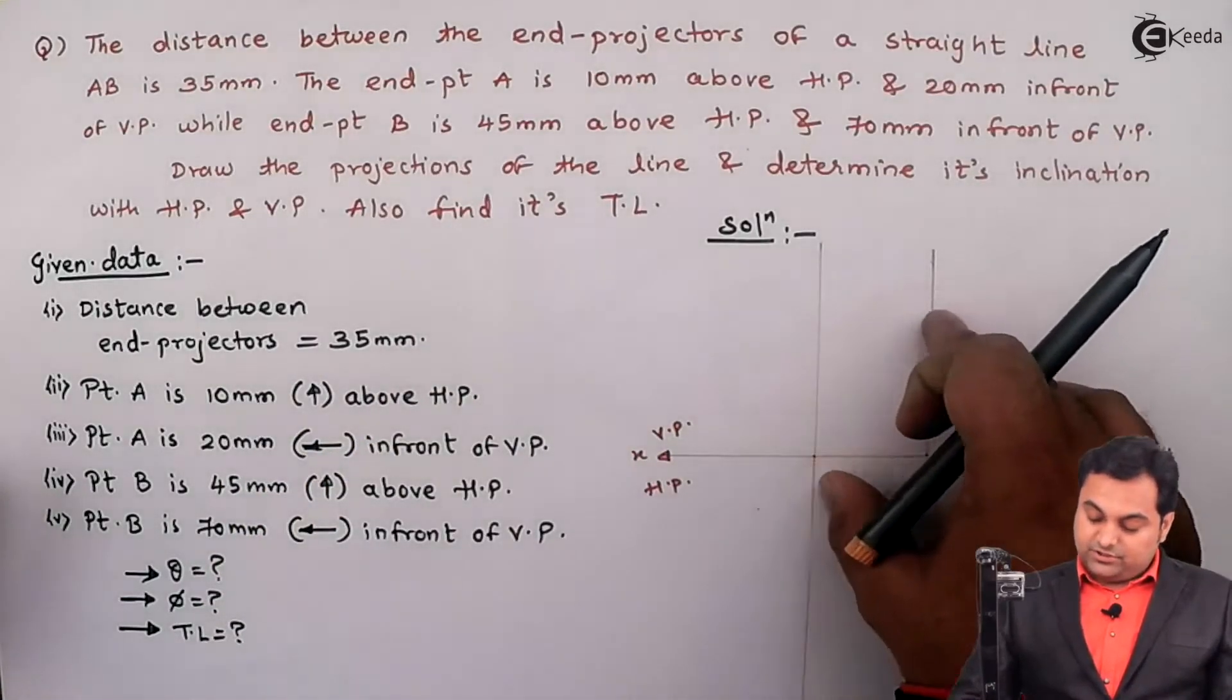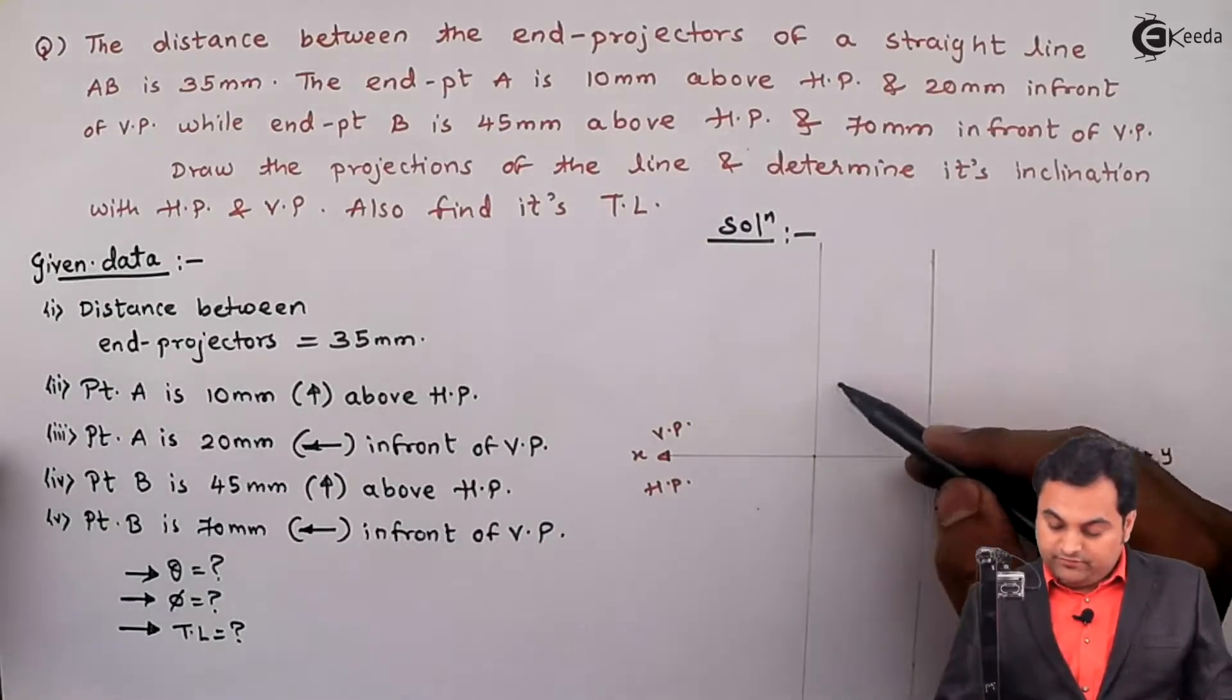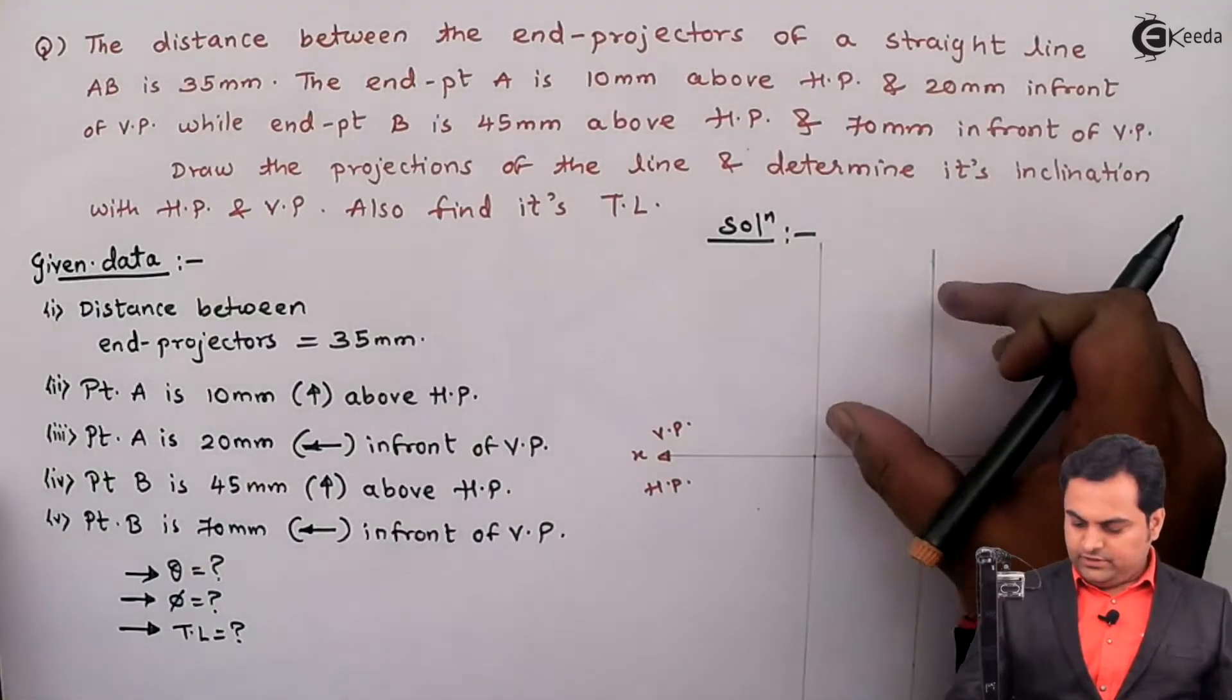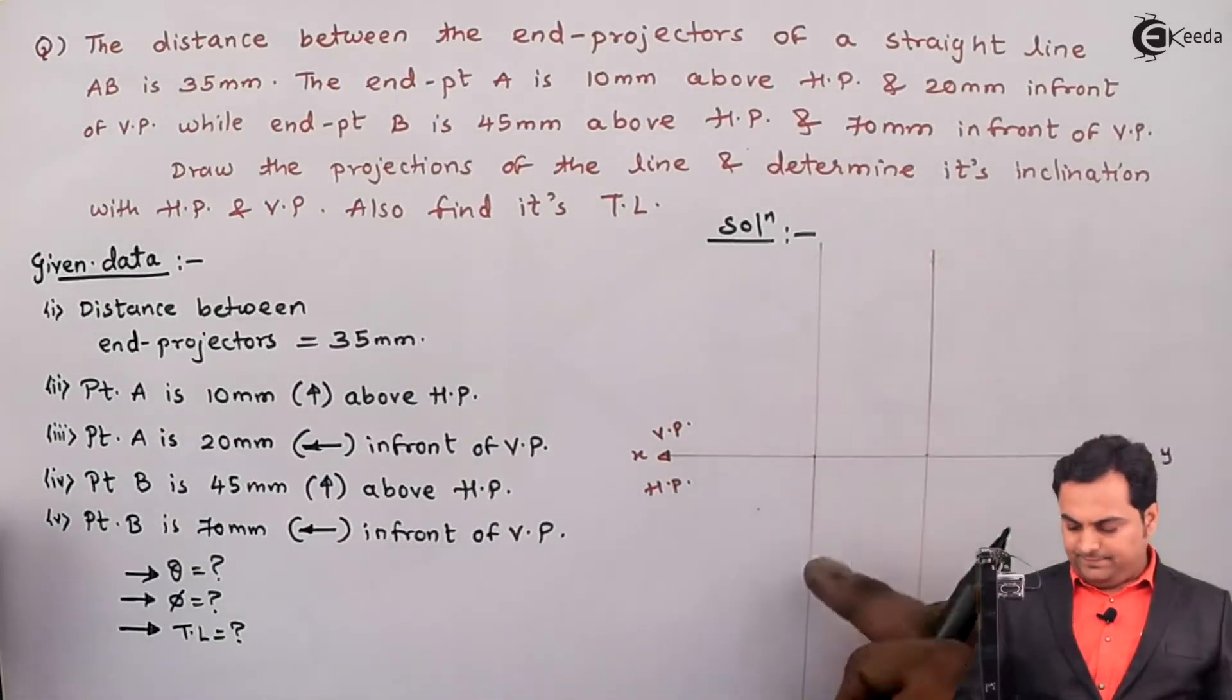So within this distance both the front view and the top view of the line should be completed, that is the actual length in the front view EL and PL which is the actual length in the top view should end between these projectors.